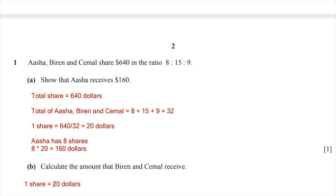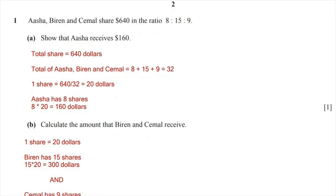Question one, part B: calculate the amount that Belen and Simmel receive. As already mentioned, one share equals $20. Belen has 15 shares and Simmel has 9 shares. Since Belen has 15 shares, it would be 15 times 20, which equals $300.